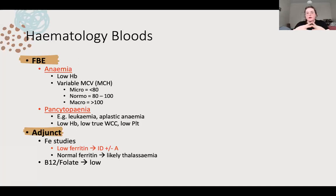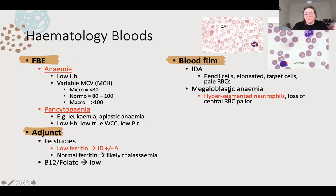Anaemia is a symptom - anaemia is never the bottom line. You need to work out why they have it. Your iron studies will be a big one, B12 and folate being your two big ones, and you'll order a blood film as well, especially if it's normocytic because you're worried about a haemolytic picture. For iron deficiency anaemia on blood film, you can see a massive pale central section because the cells are really pale, and some funky-looking cells like pencil cells and a target cell.